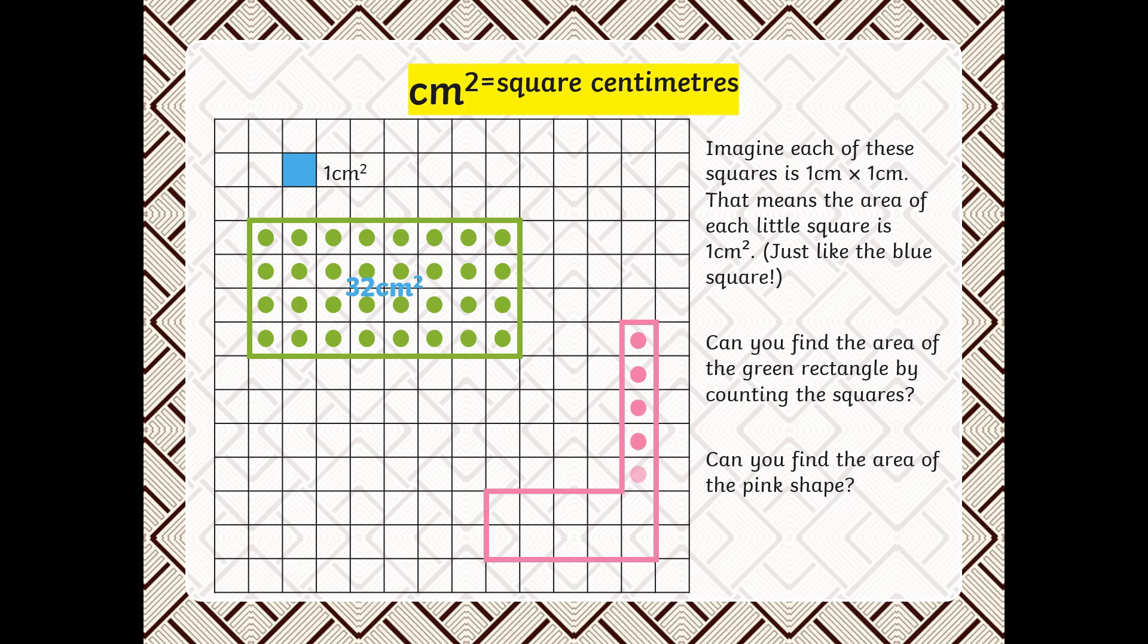Can you find the area of the pink shape? By counting the squares, the area of the pink shape is 15 square centimeters.